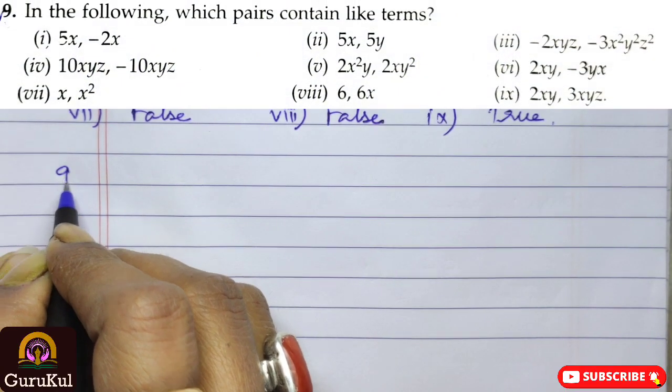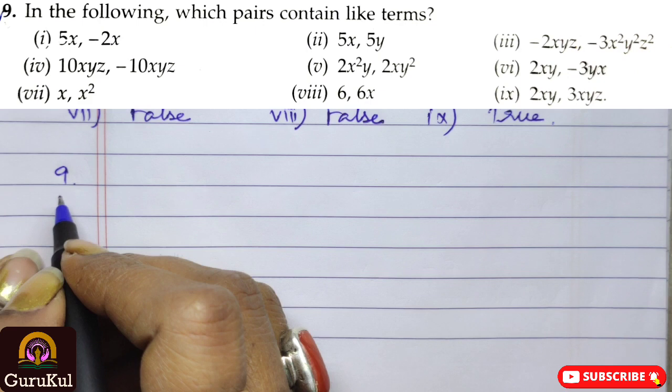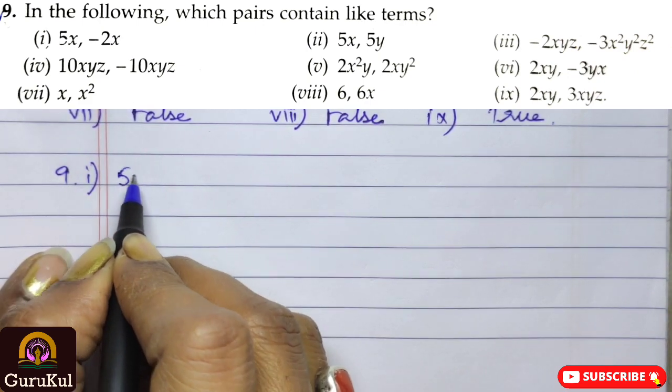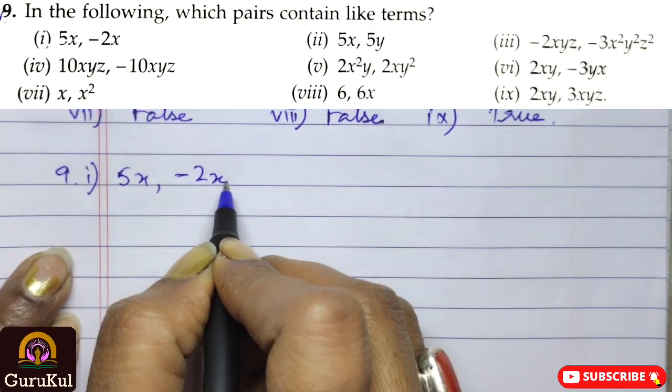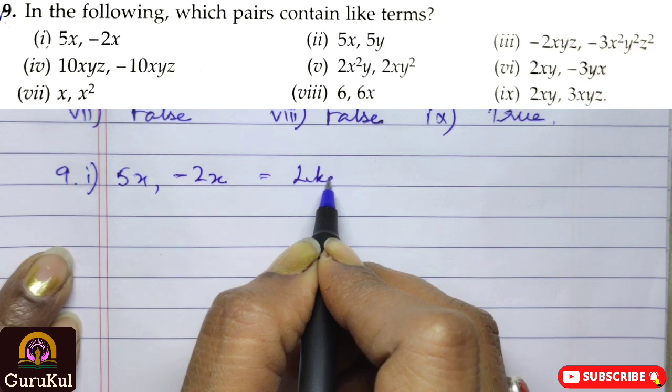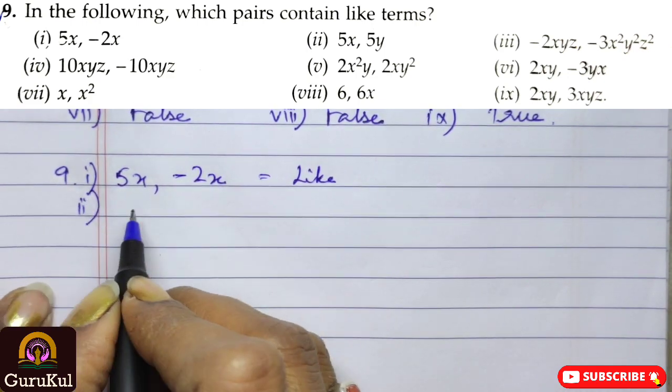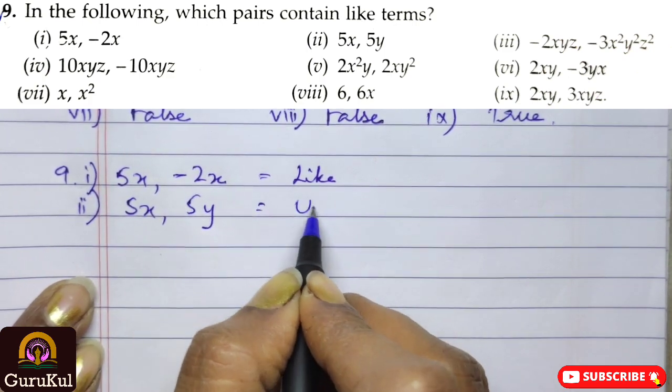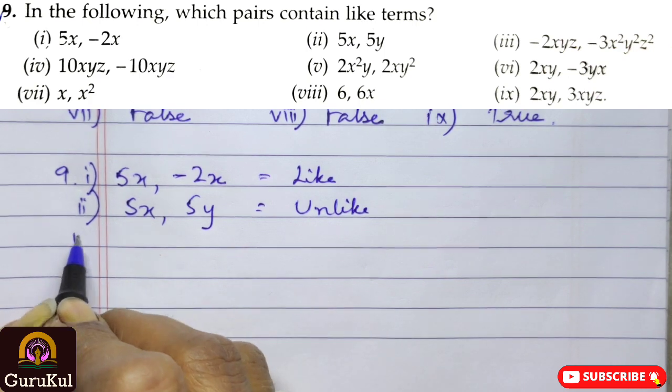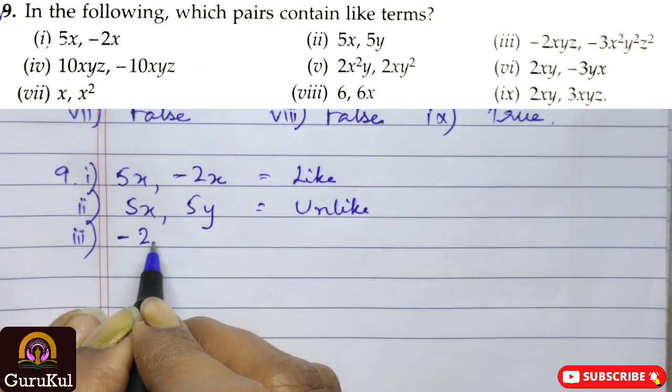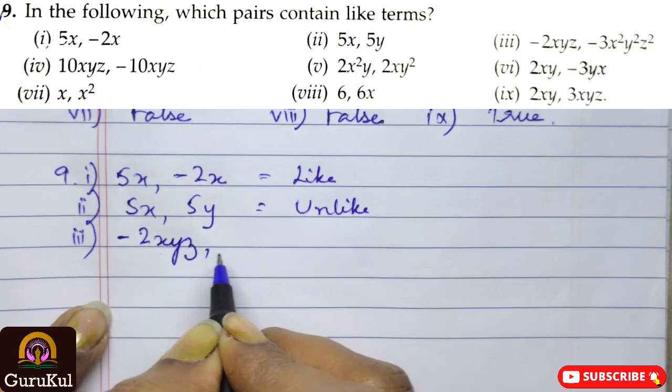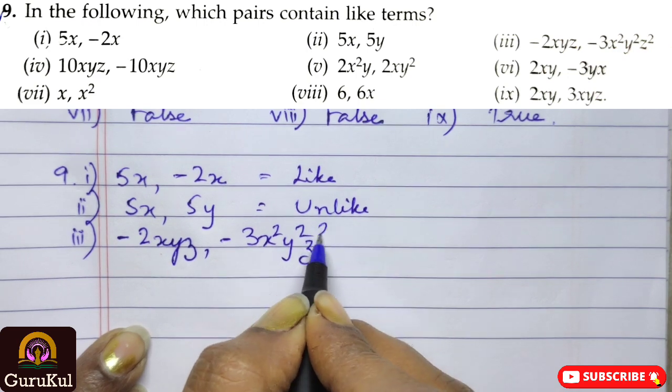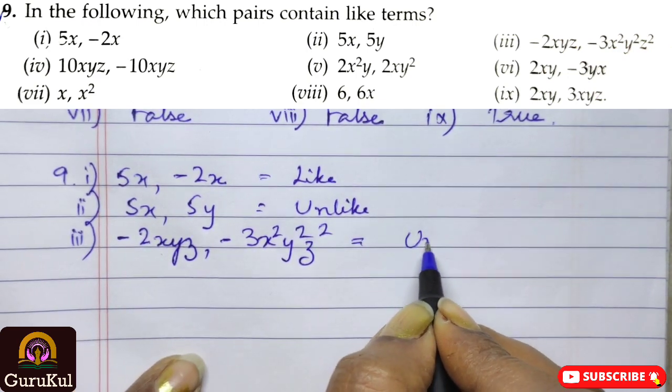Question number 9, in the following, which pairs contains like term? The first is 5x and minus 2x. So, this is like. Number 2, 5x, 5y, unlike. Number 3, minus 2xyz, minus 3x square, y square, z square. This is unlike. Like means both sides should be equal in terms of literal.